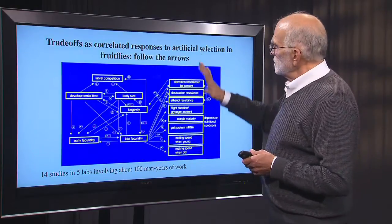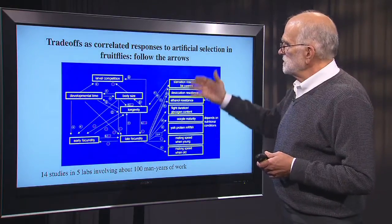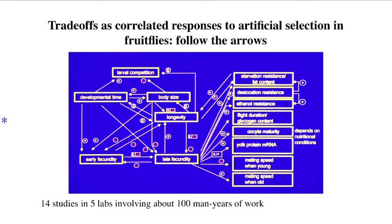These are the life history traits. The underlying physiological traits — starvation resistance, ethanol resistance, flight duration, glycogen content, yolk protein mRNA, mating speed when young and when old — depend on nutritional conditions but are pretty much what you'd expect as correlated responses underlying changes in life history traits. Almost all of these are correlated with late fecundity. Step back and look at that picture: here's an organism with somewhere on the order of 12 or 15 traits, and there are genetic connections between all of them. You can't change one without causing a cascade of changes in many others.